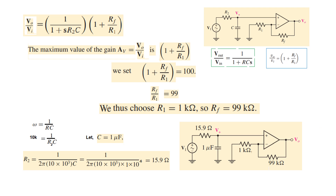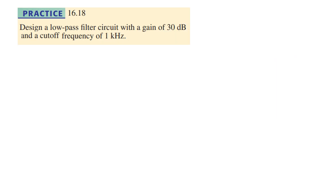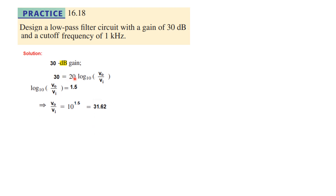Our circuit will have resistance R2, capacitance C, R1, and RF. Now let's solve the practice problem using the same technique. We need to design a low-pass filter with a gain of 30 dB and a cutoff frequency of 1 kHz. Starting with the gain: 30 equals 20 log(V_out/V_in), so taking the antilog the gain is 31.62. Therefore 1 plus RF over R1 equals 31.62, and from here RF over R1 equals 30.62.